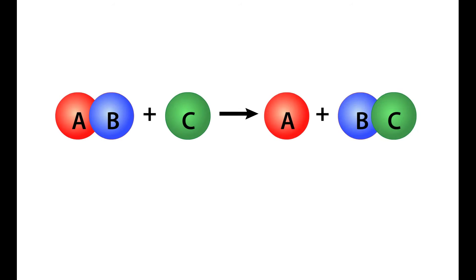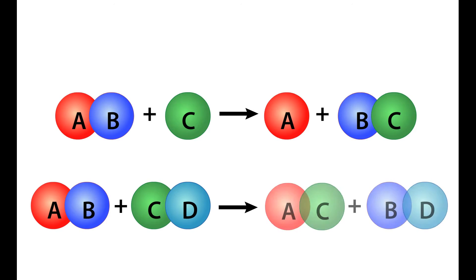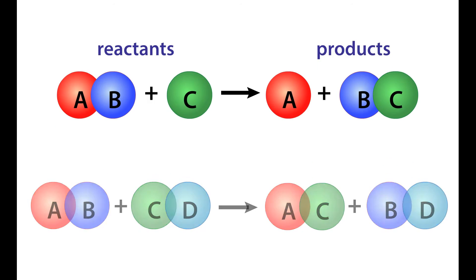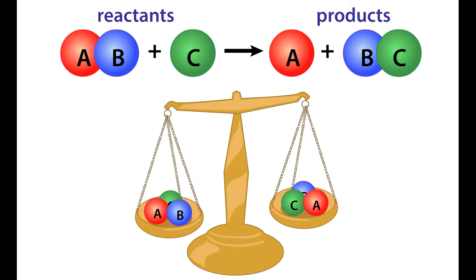In any chemical reaction, atoms are never lost or gained. They are only rearranged. All atoms of the reactants are converted to atoms of the products, which is the reason chemical equations are balanced.